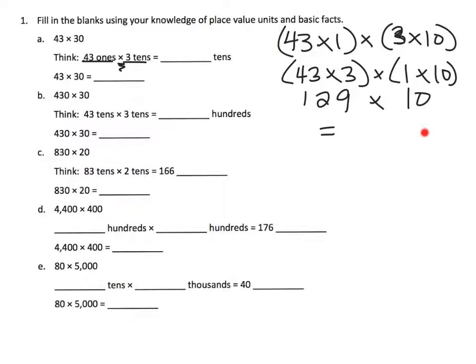This whole answer goes right here. This is all the work to explain what's going on. Right here, 43 ones times 3 tens, that's 129 tens, so that's 129 tens which ends up equaling 1290.